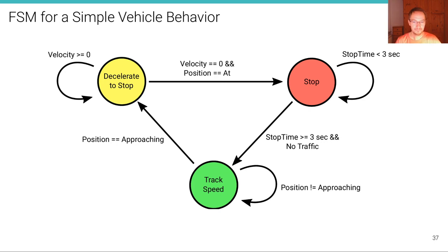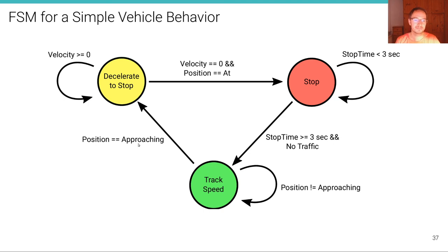Here's a finite state machine for simple vehicle behavior. We have three different states: the green 'track speed' state, the yellow 'decelerate to stop' state, and the red 'stop' state. We start in the track speed state where the vehicle is just driving. If we are not approaching an intersection or stop line, we continue to track the speed. But if the perception stack observes that we are approaching a stop line, we transition into the yellow decelerate to stop state, where we keep that state as long as the velocity is non-zero.